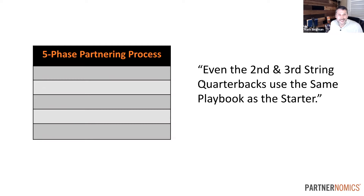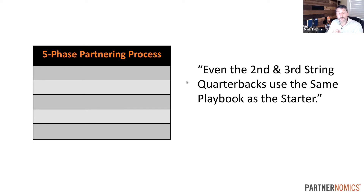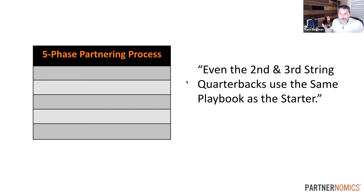One of the first things we try to instill is for organizations to create processes, identify those processes, get them written down, and then have people follow them. With a continual process improvement cycle, over the course of years you'll truly become exceptional at doing this partnering thing.